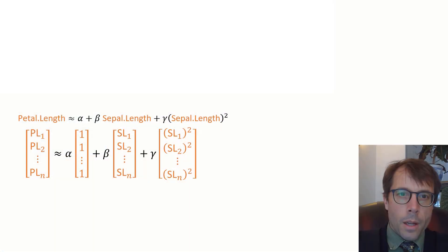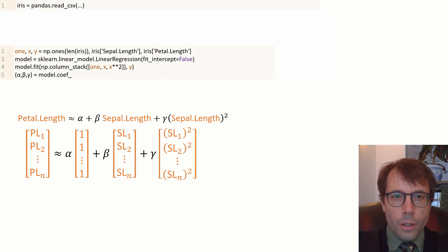Here's how you do it in Python. Here's our vector equation again, and here's the code. First, I'll load in a CSV with all of the data, line one. Then line two, I get my vectors, the constant one vector, the sepal length vector, I'm calling it x here, and the petal length vector, let's call it y.